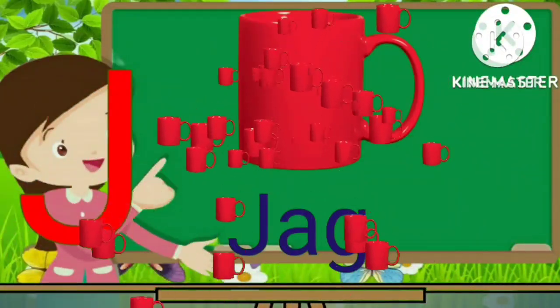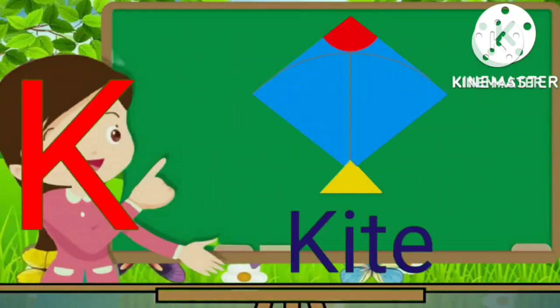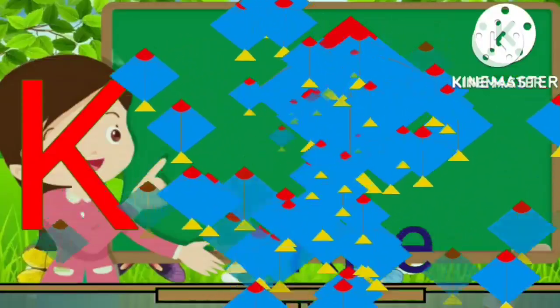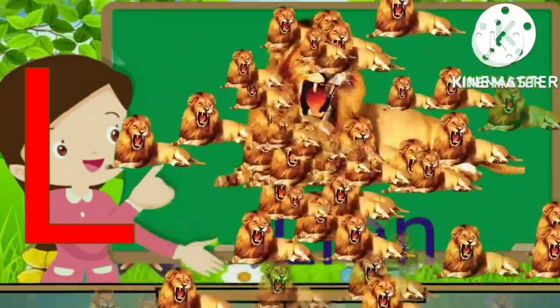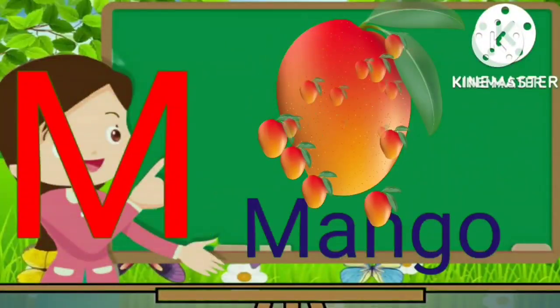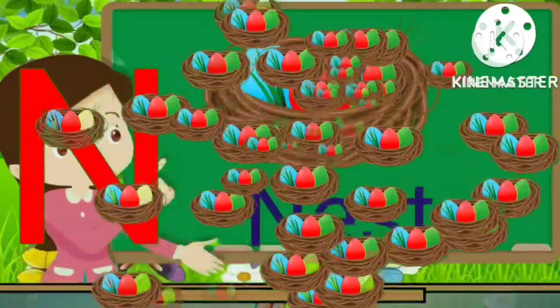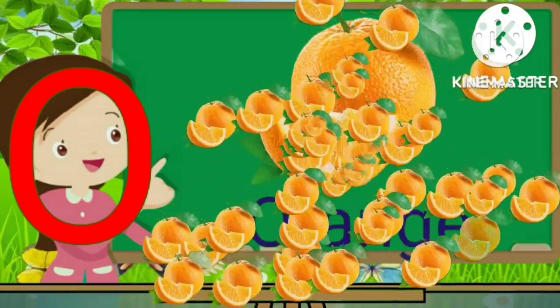J for jag. K for kite. L for lion. M for mango. N for nest. O for orange.